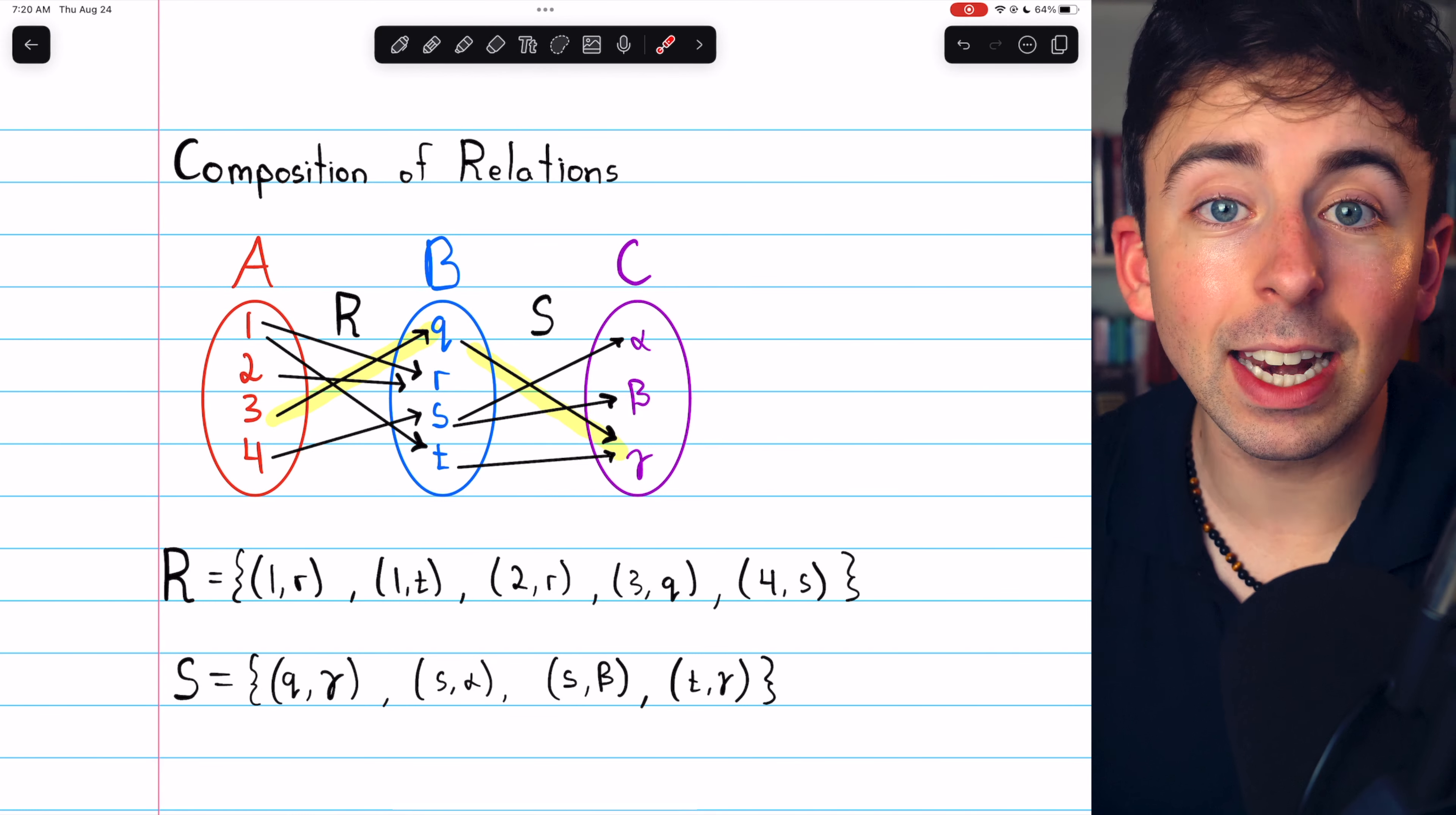Here is the entire composite relation written out. You can see how I've notated the composition. We'll talk about notation in a second. But just for another example, you can see that 4 is related to alpha, and 4 is related to beta.